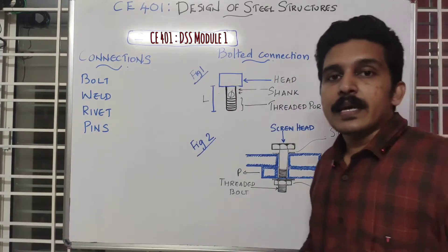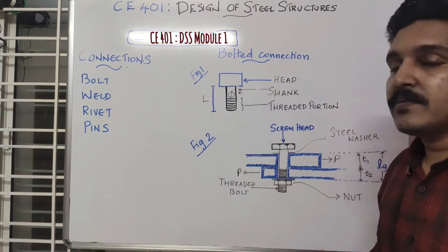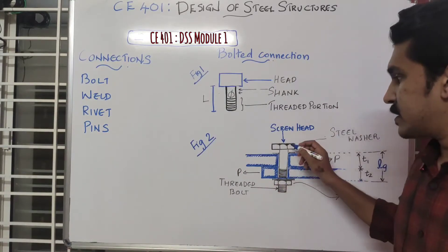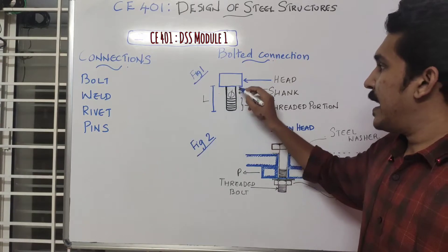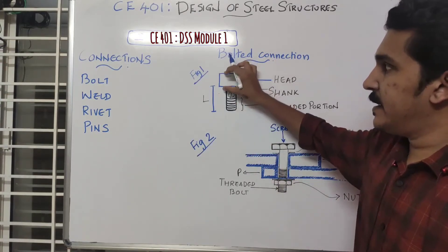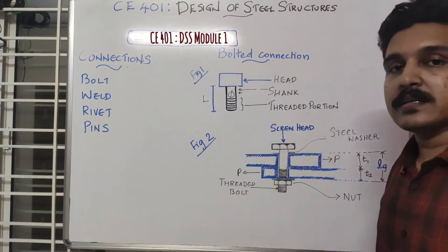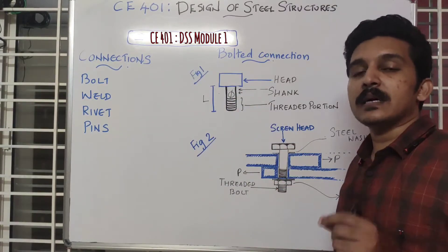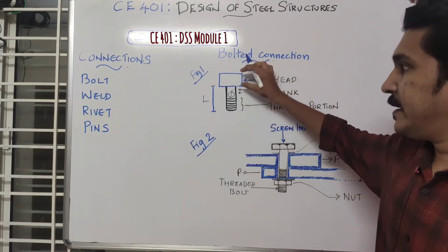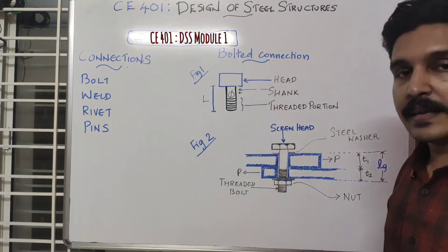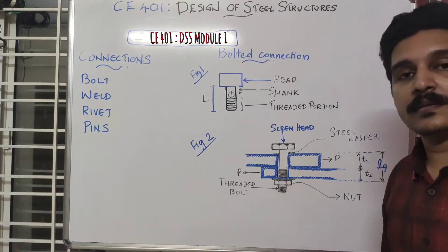The first topic we will take up is what is a bolted connection. A bolted connection involves two parts: a nut and a bolt. A bolt has a head and a shank area. The shank diameter is what we use to represent a bolt. These are the different parts of a bolt: head, shank, and a threaded area. The threaded area is where a nut fits in.